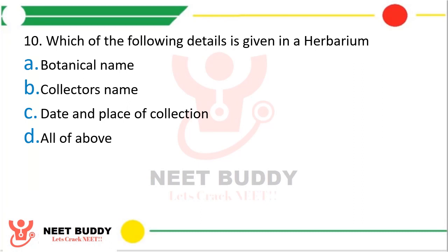Question 10. Which of the following details is given in a herbarium? Option A, Botanical name; Option B, Collector's name; Option C, Date and place of collection; or Option D, All of the above. The correct answer is Option D, All of the above.